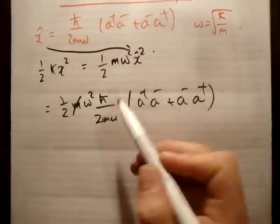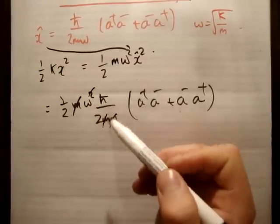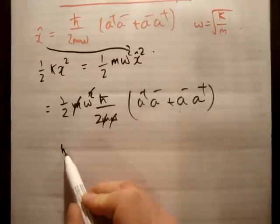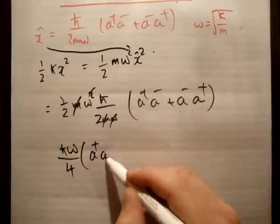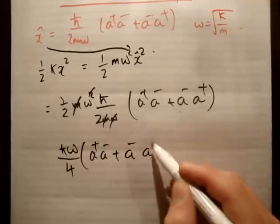And can we cancel anything? m goes, the omega goes, one of the omegas go. And we have h bar omega over 4, a plus a minus plus a minus a plus.